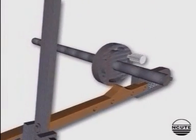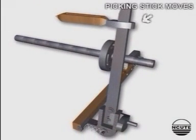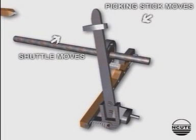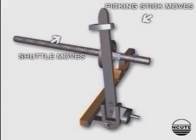This action is now transferred to the picking stick which turns inward. The picker then strikes the shuttle to insert the weft. The picking stick, picker, and side lever are returned to their original positions by the spring.